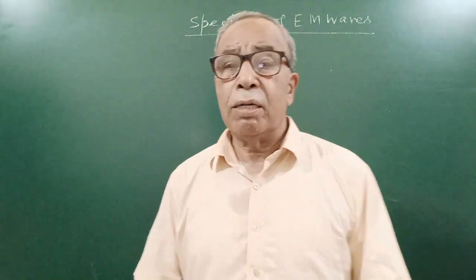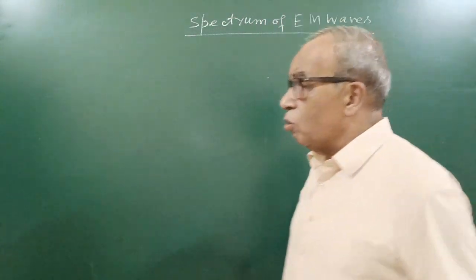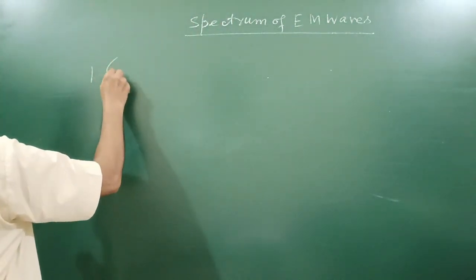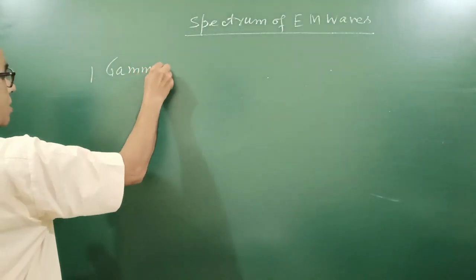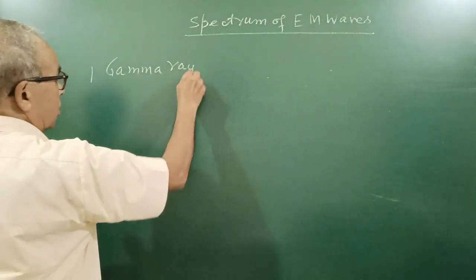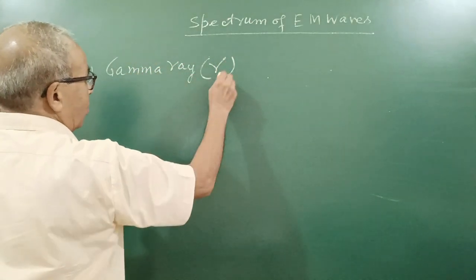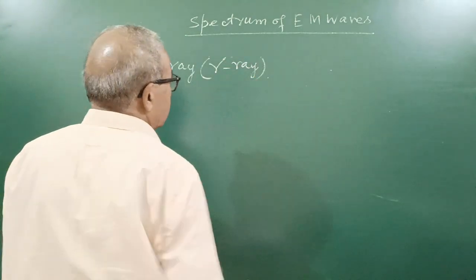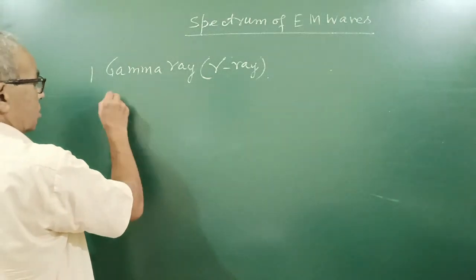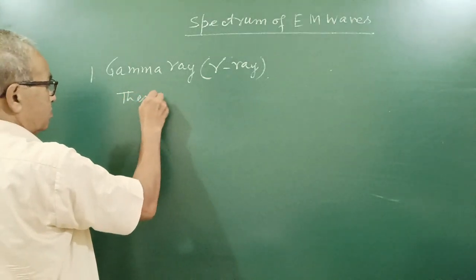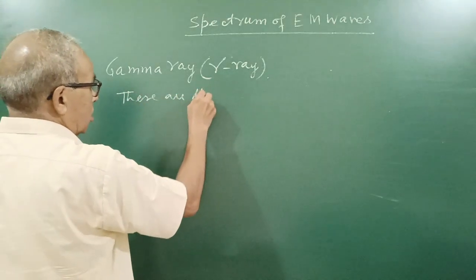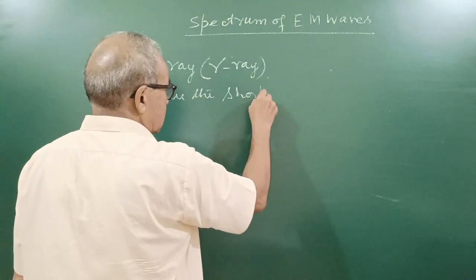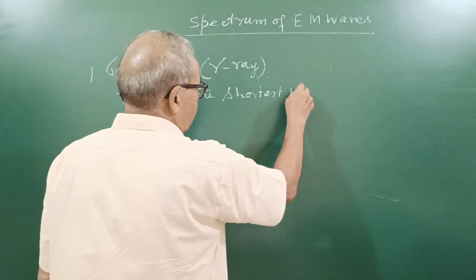So these are different waves. I take here one by one. First of all, I take gamma rays. These are the shortest wavelength radiation.